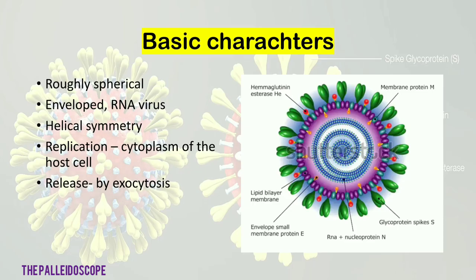The basic morphological characters are: it is roughly spherical in shape, it is an enveloped virus, the nuclear material is made up of RNA, it has helical symmetry, replication occurs in the cytoplasm of the host cell, and release is by exocytosis.